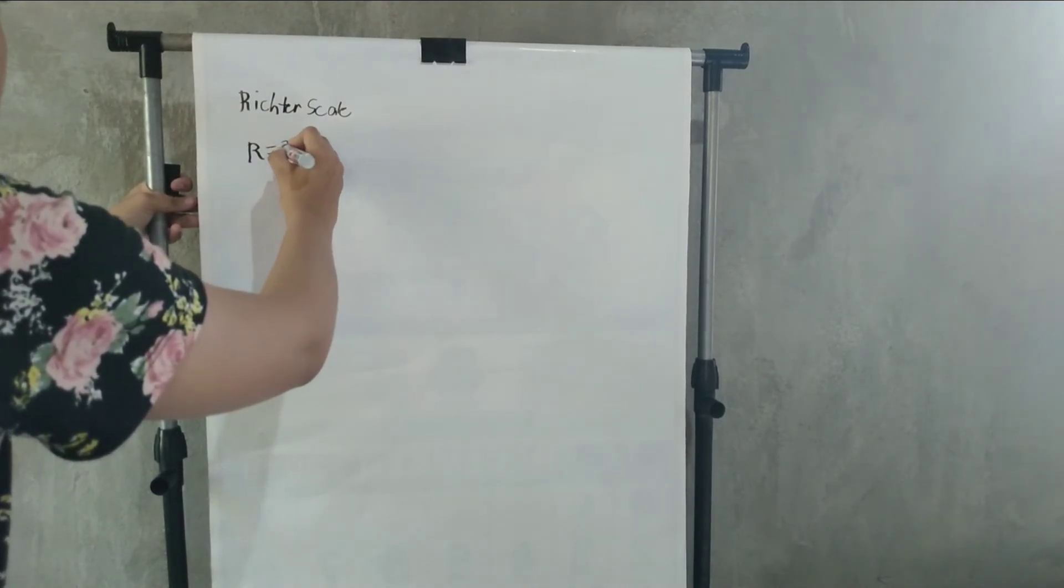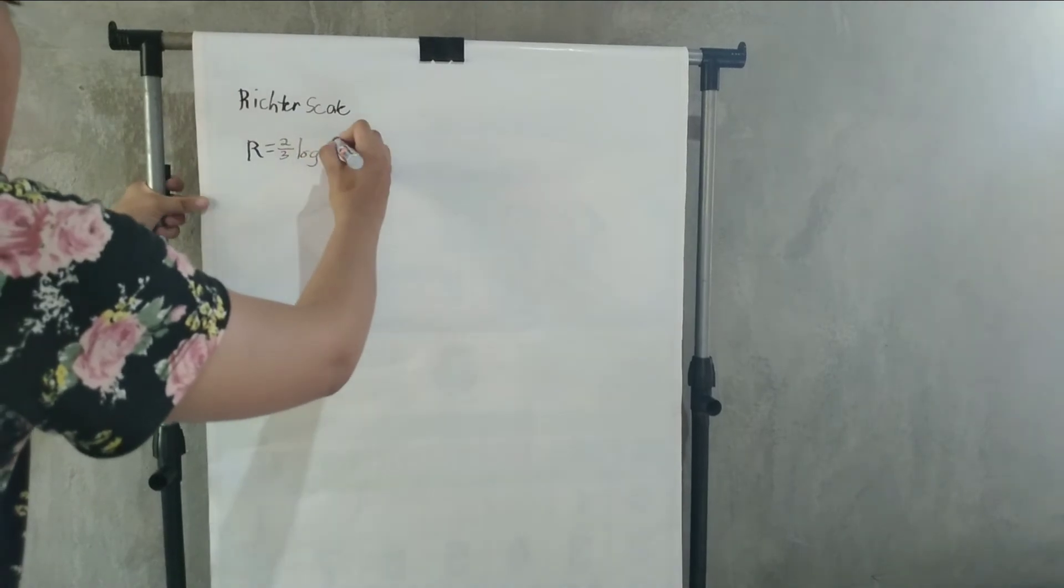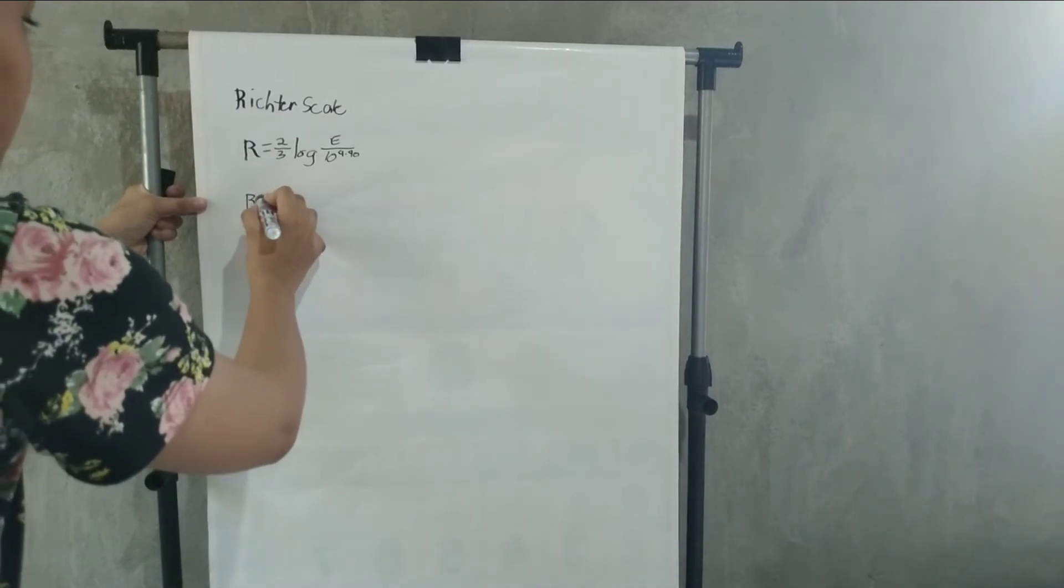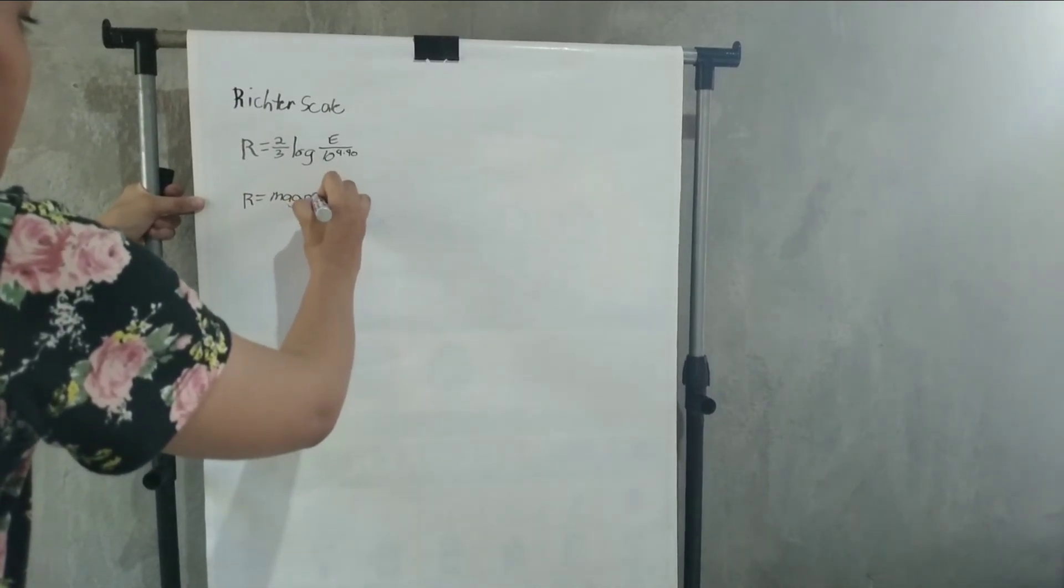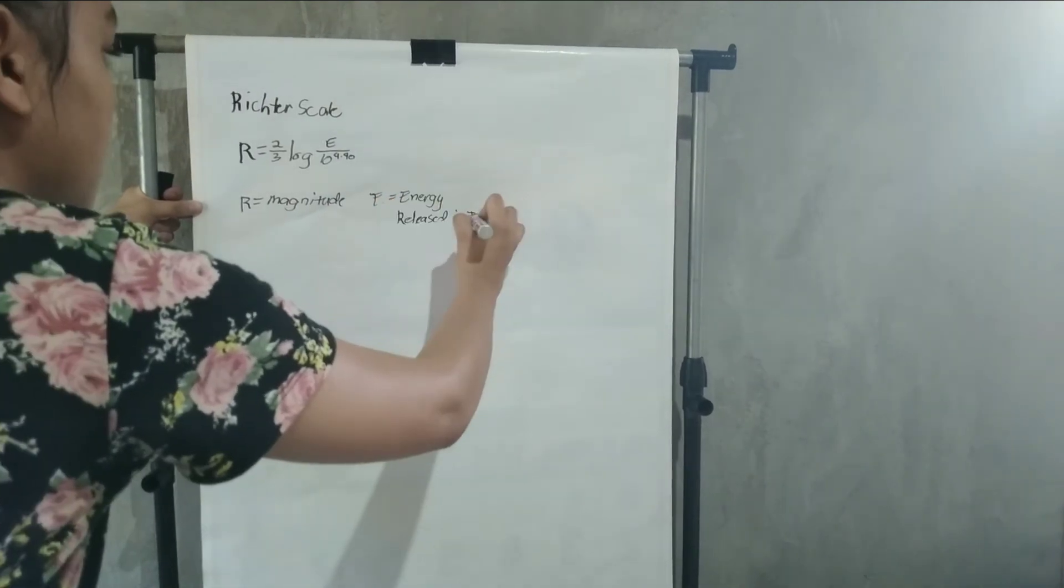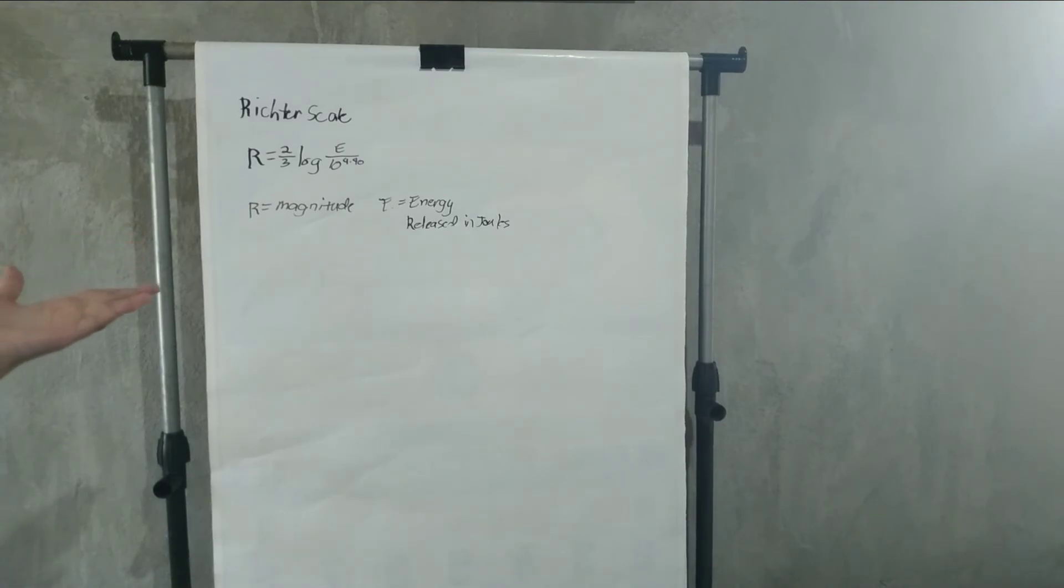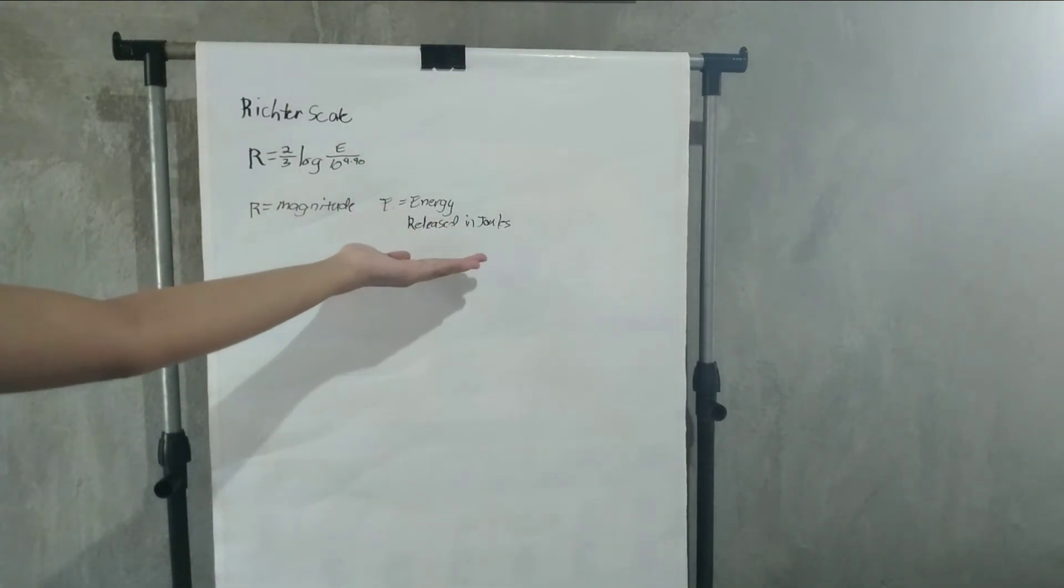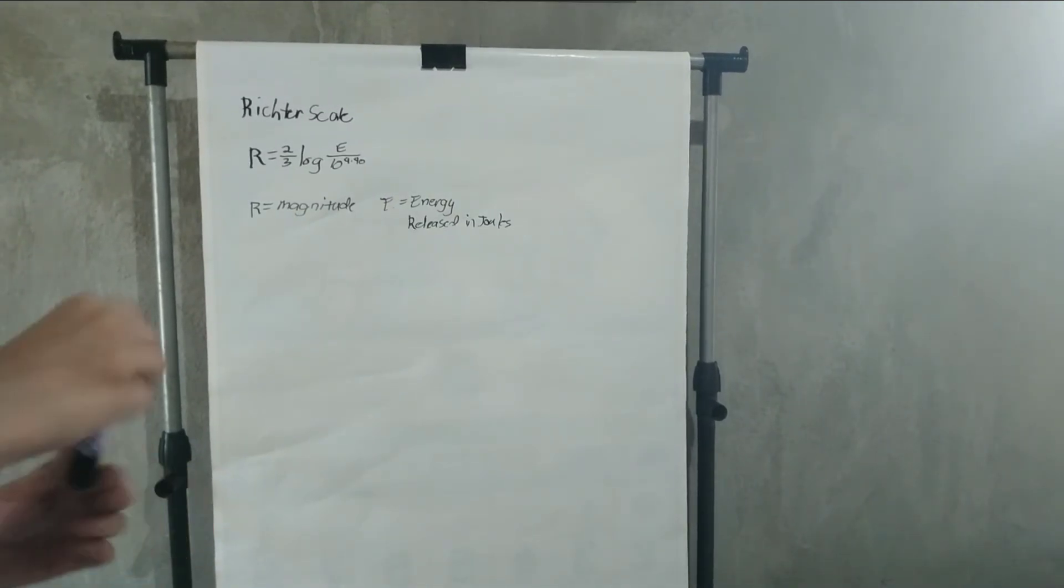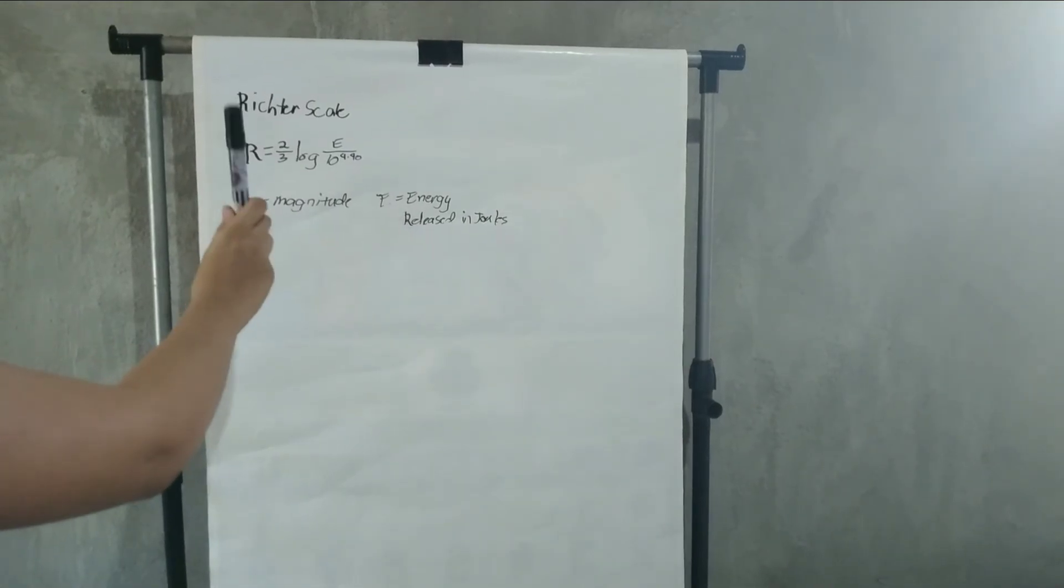R equals 2 over 3 log E over 10 to the power of 4.40, where R is the magnitude and E is the energy released in joules. Using the Richter scale, we can find the magnitude when the energy released in joules is given. But today, we're going to talk about finding the energy released in joules using the magnitude given.